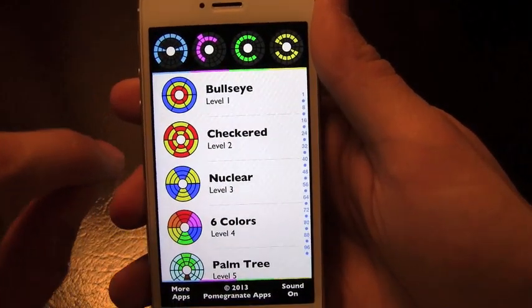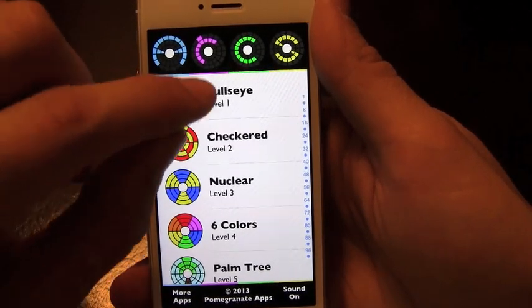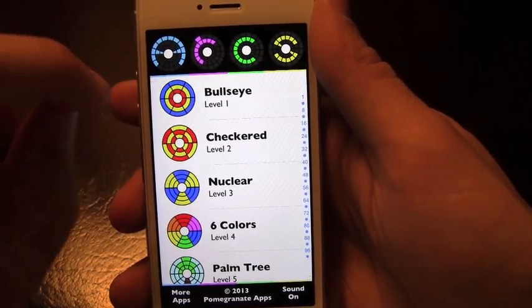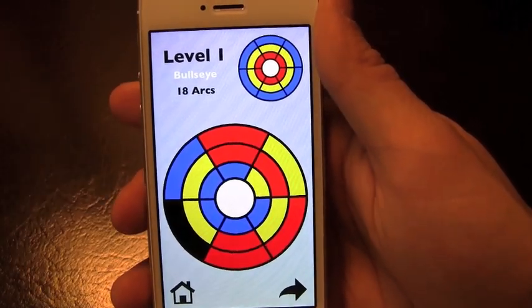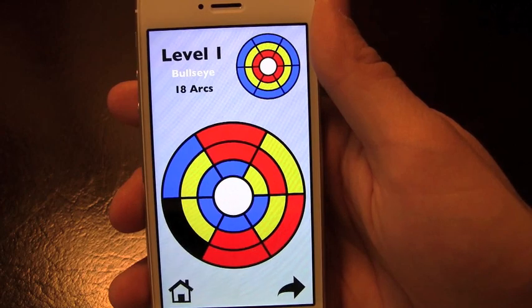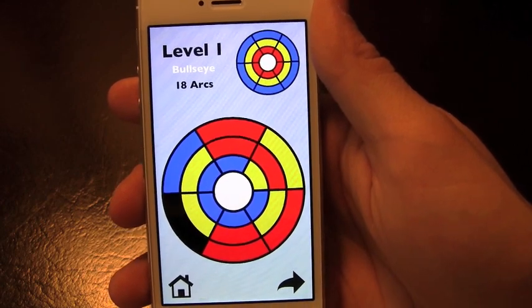So we'll go into level 1 to kind of get you started here with what this game is about. This one's called Bullseye with level 1. It's called Bullseye for a reason. It does look like one of those dart Bullseye games. Now here, you're going to have to rotate circles and slide arcs until you get a match, and you'll see what I mean by that.